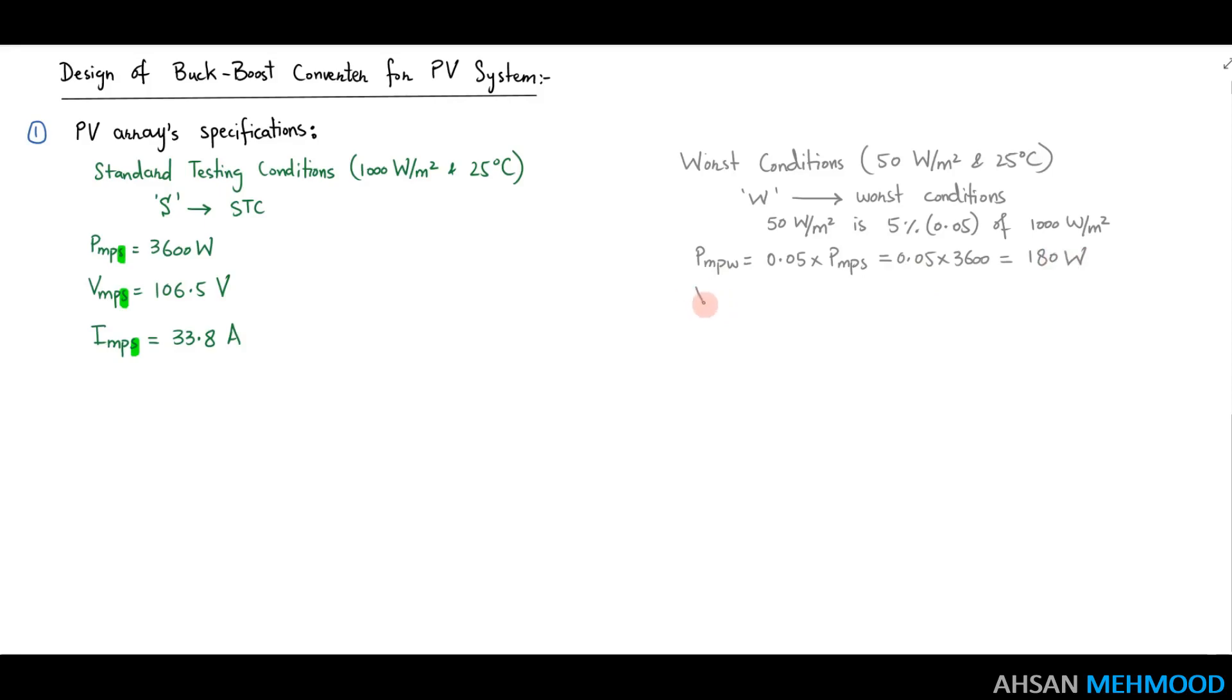Because irradiance changes have little effect on the value of array voltage in principle, the maximum power voltage in the worst case VMPW will be in the 90 to 110% range of VMPS. In this case, I'll assume that VMPW equals 0.9 times VMPS, which is 95.85 Volt. By dividing PMPW by VMPW, the maximum power current for the worst scenario IMPW equals 1.88 Ampere.